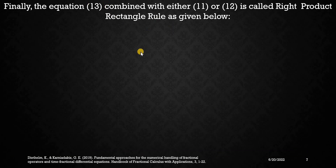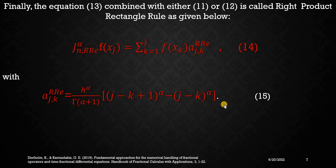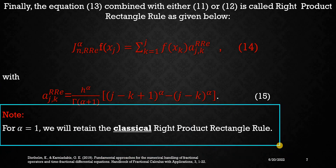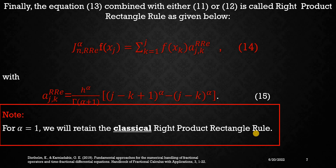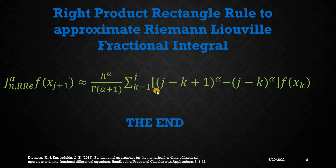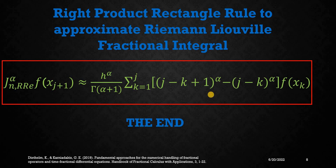Finally, combining equation 13 with equation 11, we obtain what we call the right product rectangle rule, now given by equations 14 and 15. This is how we derive the right rectangle product rule. Note that if you replace alpha by 1, we will be back to the classical right product rectangle rule that we have already learned in our undergraduate classes in the subject of numerical analysis or numerical methods. This rule, written in one line as shown on the screen, is used to approximate the Riemann-Liouville fractional integral.